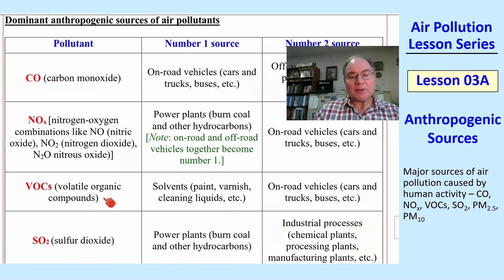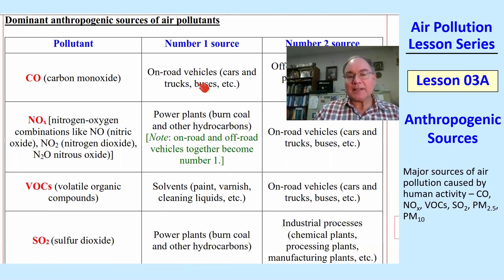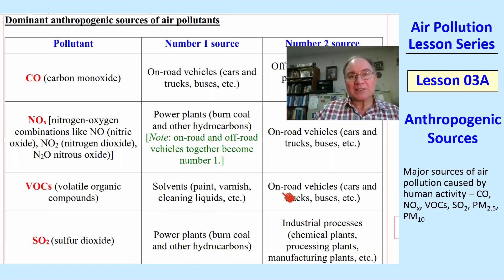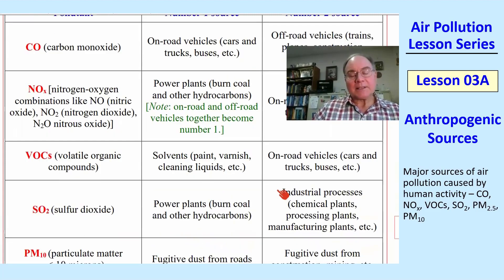VOCs — volatile organic compounds — come from paint and varnish, etc. That's the number one source. On-road vehicles are the second source of VOCs. When you burn gas or diesel driving down the road, you give off some VOCs, including some unburned gasoline.